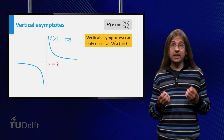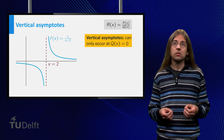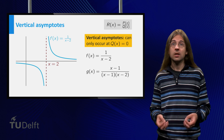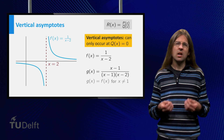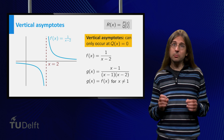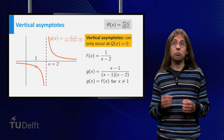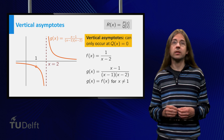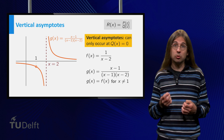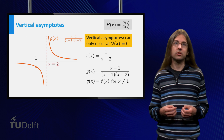A rational function can only have vertical asymptotes at zeroes of the denominator. Now consider g equals (x minus 1) over ((x minus 1)(x minus 2)). This can be simplified to f. However, g is not defined at x equals 1, whereas f is. Apart from this difference in domain, the functions are equal. In the graph we denote the fact that 1 is not in the domain by adding an open circle at x equals 1. Notice that g has no vertical asymptote at x equals 1, even though this is a zero of the denominator. This is because the numerator also vanishes at x equals 1.